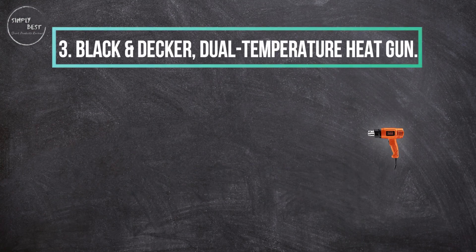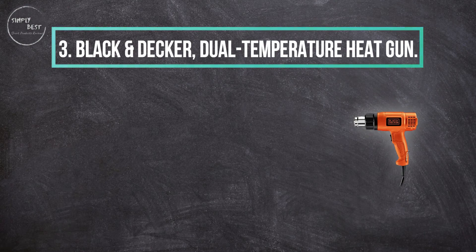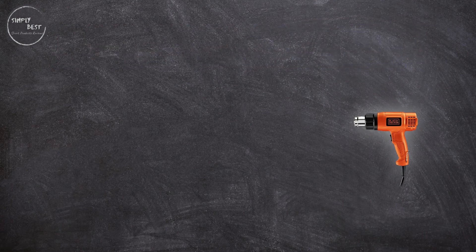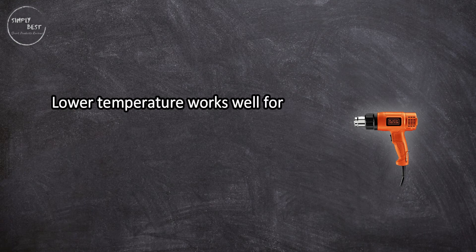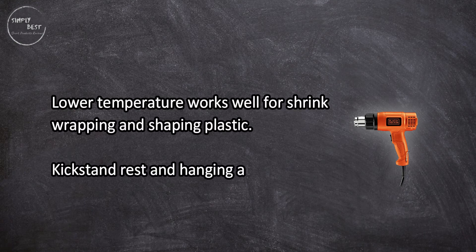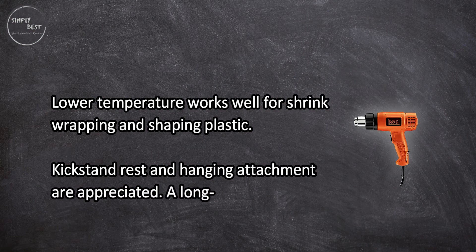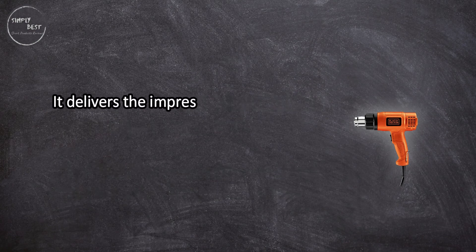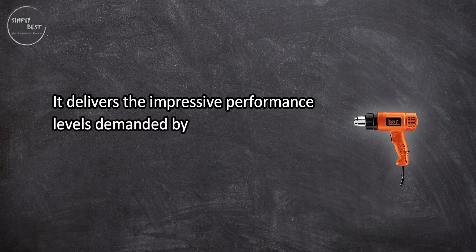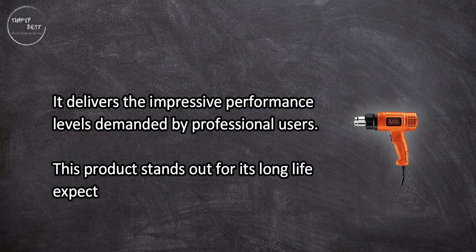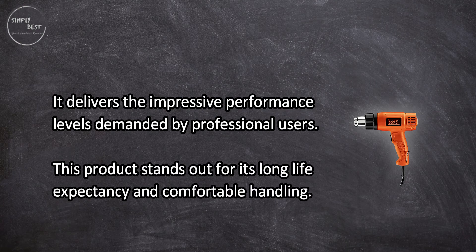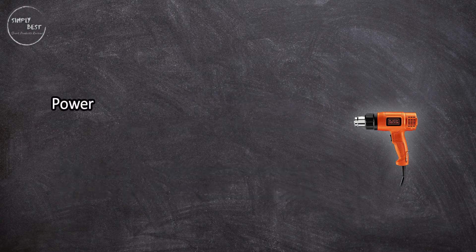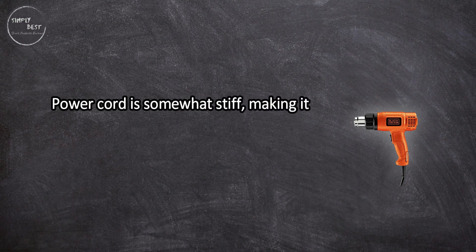At number three, Black and Decker dual temperature heat gun. Lower temperature works well for shrink wrapping and shaping plastic. Kickstand rest and hanging attachment are appreciated. A long-lived design, it delivers the impressive performance levels demanded by professional users. This product stands out for its long life expectancy and comfortable handling. Power cord is somewhat stiff, making it harder to move the gun around in tight spots.